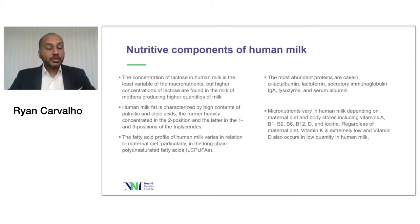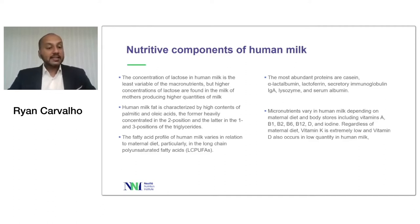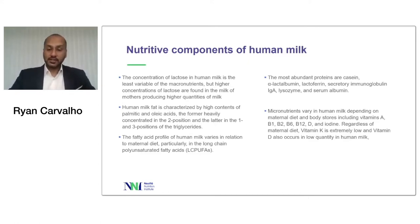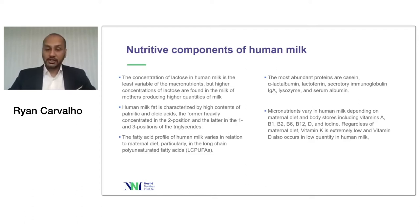Let's start by looking at the nutritive or macronutrient-contributing components of human milk. The concentration of lactose, which is essentially the only sugar in human milk, is the least variable of the macronutrient components, and higher concentrations are found in milk of mothers producing higher quantities of milk. Human milk fat is unique and characterized by high contents of palmitic and oleic acids. Palmitic acid is heavily concentrated in the two position, and oleic acids in the one-three positions of triglycerides. The fatty acid profile of human milk varies in relation to maternal diet, as seen from data on long-chain polyunsaturated fatty acids.